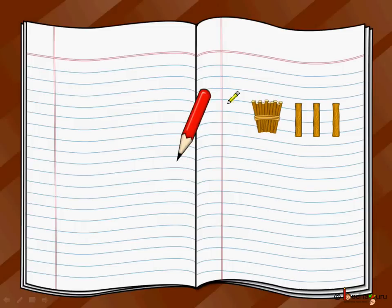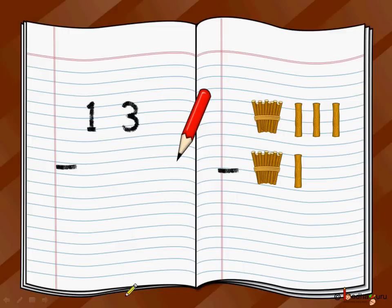Let us say we have 13 sticks, and from that we want to remove — that is take away — so we put a minus sign — we want to take away 11 sticks from it. That is, given 13 sticks, we want to remove 11 sticks.